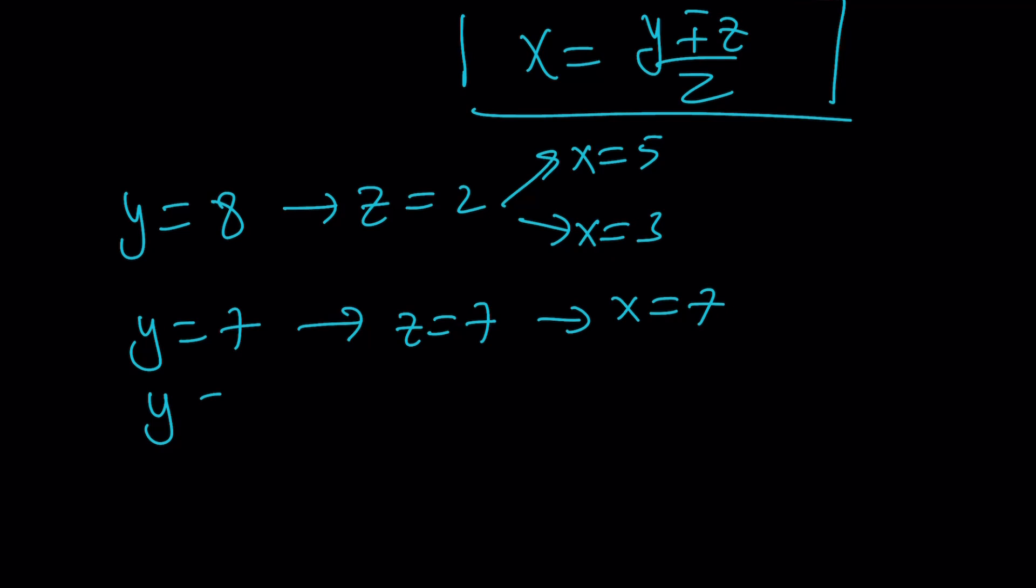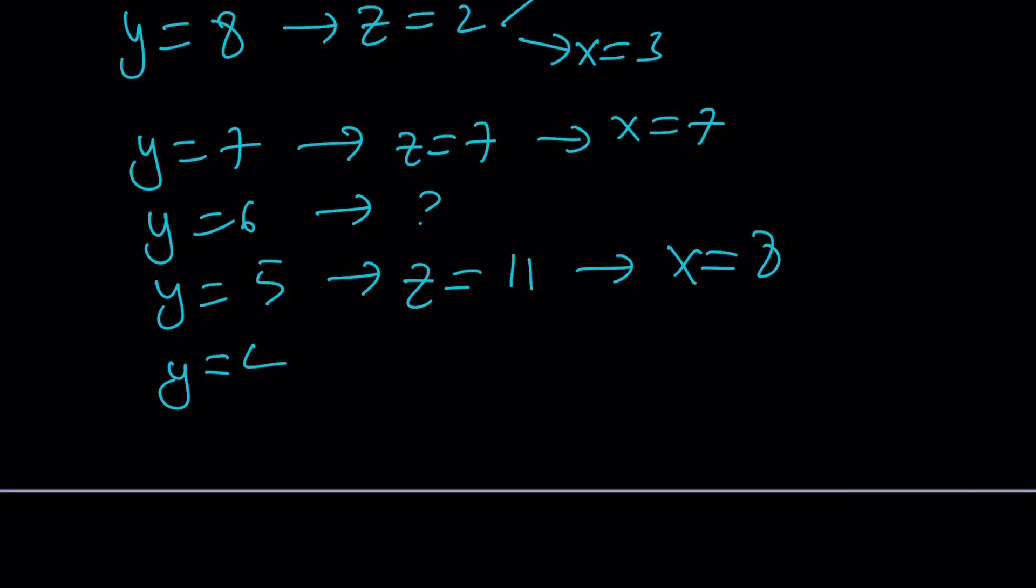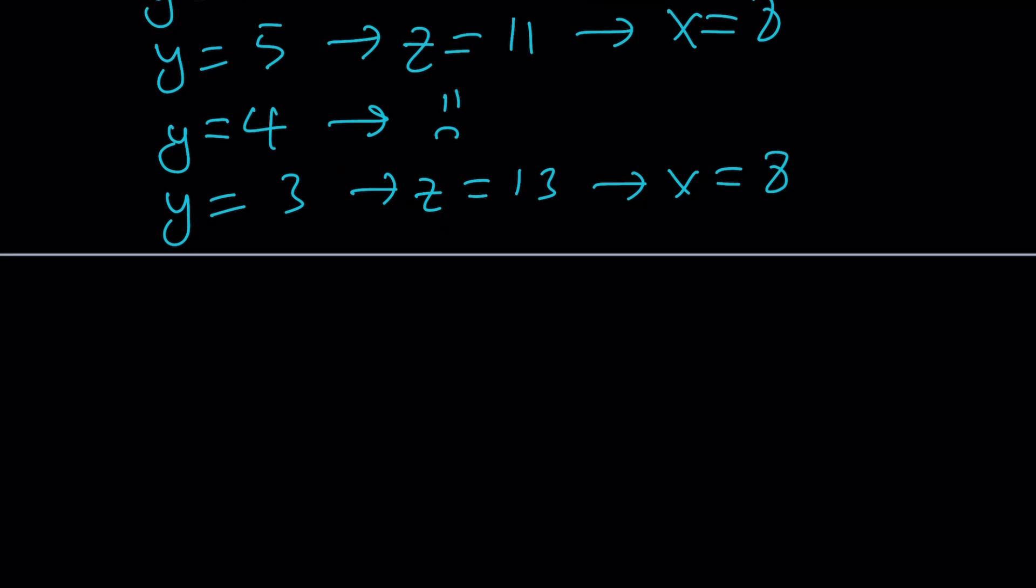If y equals 6, then we're not getting anything. If y equals 5, we're getting z equals 11, which implies x equals 8. Again, you can verify these. If y is equal to 4, we don't get anything. And then if y is equal to 3, then z is equal to 13. That means x is equal to 8 again, but for a different y this time.